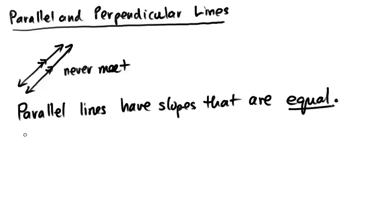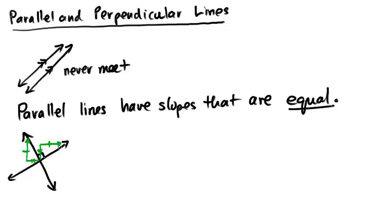Perpendicular lines meet at 90 degrees. If you know one slope, the other slope can be calculated by switching some things around — essentially, if you went up a certain amount and across a certain amount, you're now going across and up those amounts. One slope ends up positive and the other slope is negative.